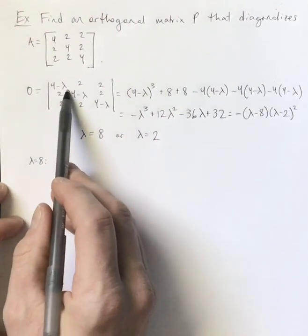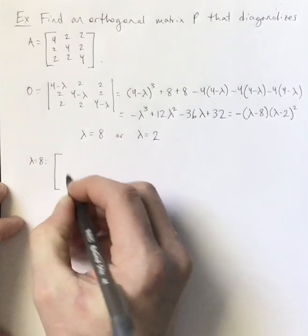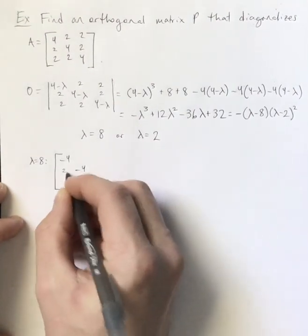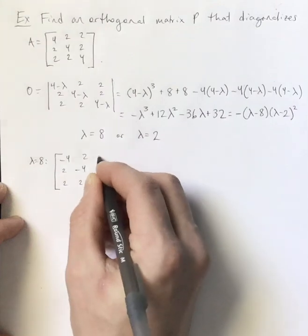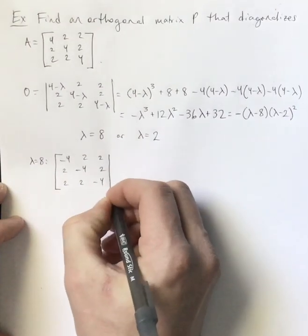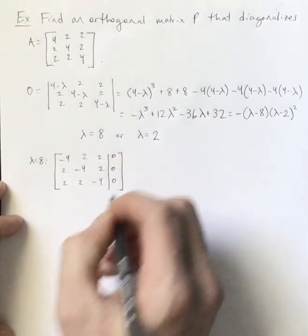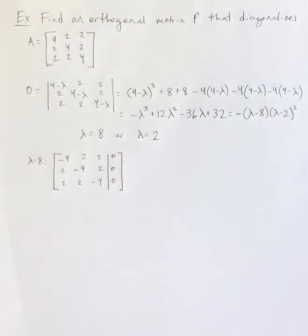So if I put 8 in right here, I get negative 4 along the main diagonal. And, of course, 2's everywhere else. And I'm going to be solving the system, the homogeneous system, where that is equal to 0.